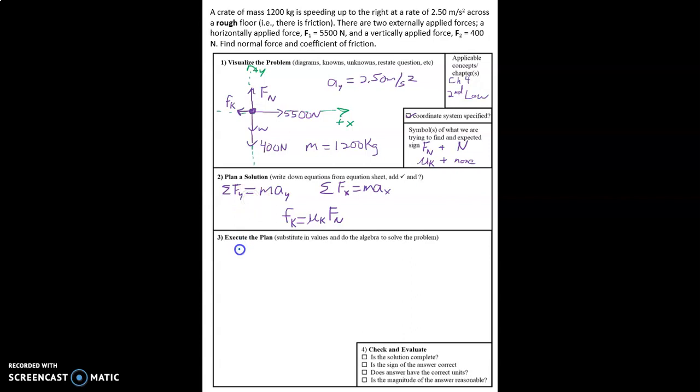We're going to take this equation and say the normal force minus the weight, and the weight is mg, 1200 kilograms times 9.8 meters per second squared, minus 400 newtons equals the mass, which is 1200, but the acceleration in the y direction is equal to zero.